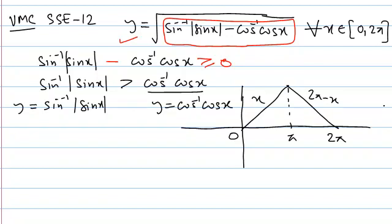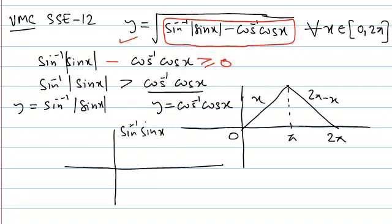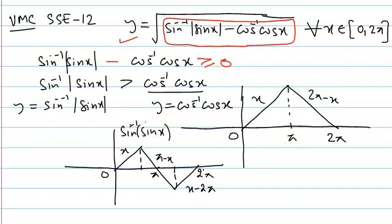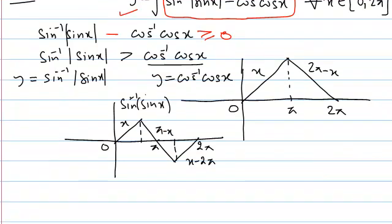For sin⁻¹(sin x), we need to remember its graph as well. sin⁻¹(sin x) is also a periodic function with period 2π. It is y = x up to π/2, then y = π − x up to 3π/2 — all straight lines.